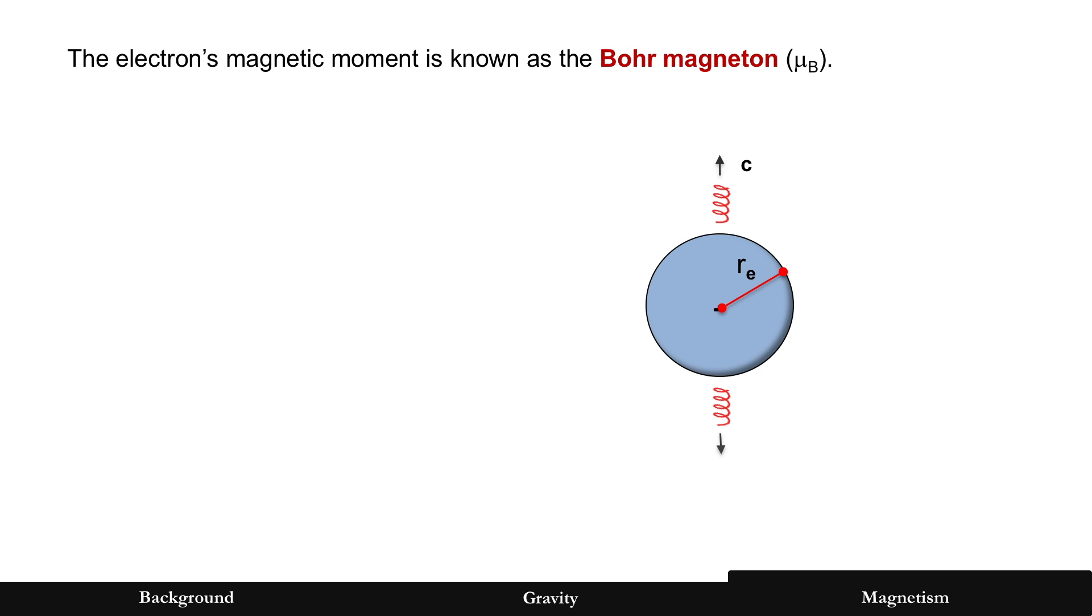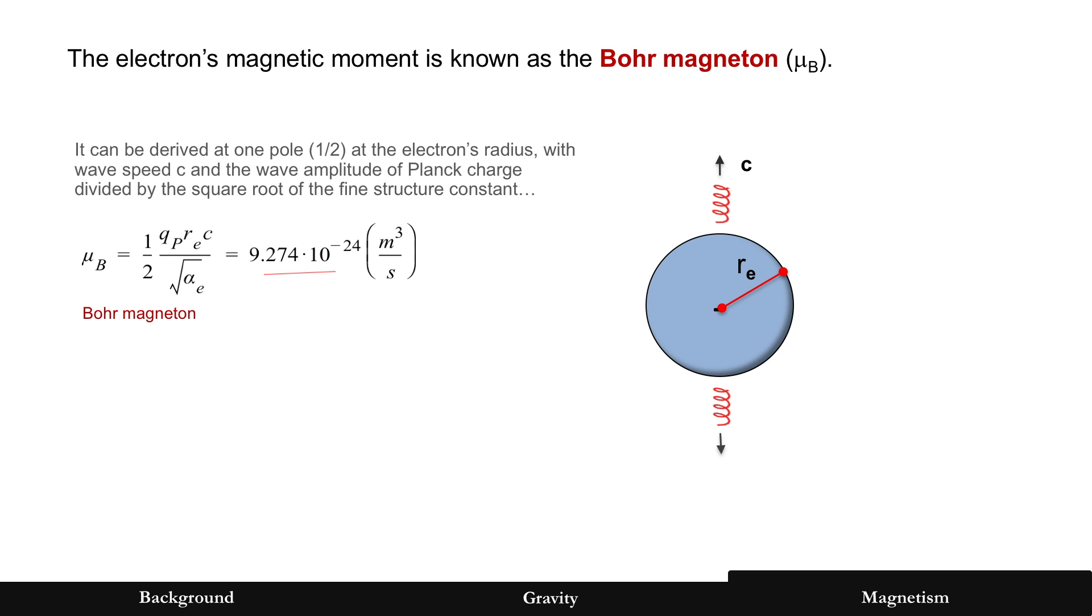And what is the electron's magnetic moment? It's known as the Bohr magneton. So, let's derive that now, with a wave speed of c. That's the speed of light. All the electromagnetic waves travel at that speed. Measured flowing out of the electron's radius at that amplitude earlier. Remember, the amplitude is Planck charge divided by the square root of the fine structure constant. Now, we're measuring it at one pole. There's two poles, so we take half of that. And what do you get when you put all that together? You get the volumetric flow rate in terms of units that I explained, but you also get the value of the Bohr magneton. It's a flow rate.